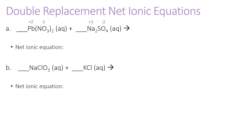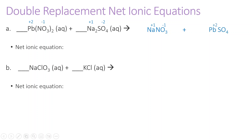If I switch sodium and lead, instead of lead nitrate I'm going to have sodium nitrate. Sodium is plus one and nitrate is minus one, so these charges already work out. This is going to leave me with lead and sulfate. Lead is plus two and sulfate is minus two, so again these charges already work out.